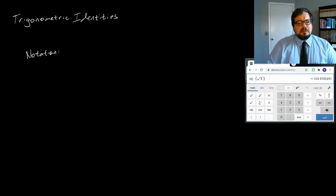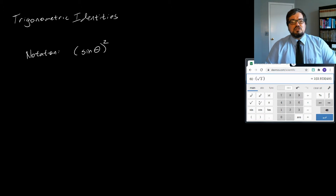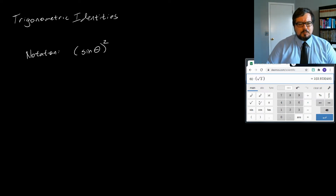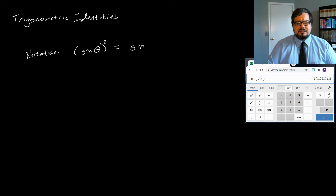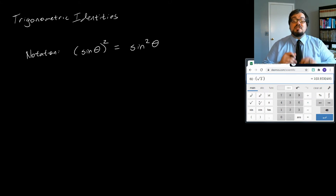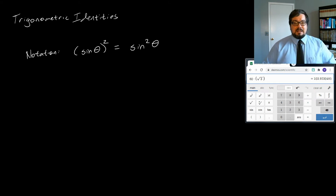We're often going to be looking at expressions of the form sine theta squared, where we take the value of a trigonometric function at an angle and square it. These turn out to be very important, and sometimes we raise them to higher powers. For historical reasons, we're going to write the expression sine theta in parentheses squared as sine squared of theta. This is just a notational device — whenever you see the right-hand type of expression, it means the left-hand type.